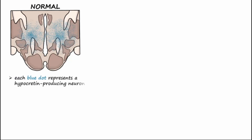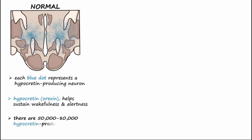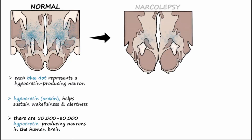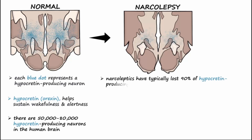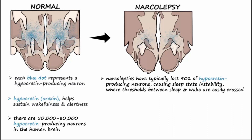Neurons in the hypothalamus release hypocretin, also called orexin, onto many areas of the brain and brainstem to help sustain wakefulness and alertness. There are 50,000 to 80,000 hypocretin-releasing neurons in the human brain. Narcoleptics have typically lost 90% of these, causing sleep state instability, where thresholds between sleep and wake are easily crossed.